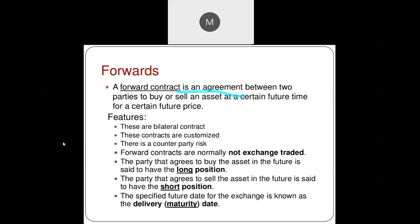Looking at the features of a forward contract: the first feature is that it is a bilateral contract, because it takes place between two parties. Consider two parties X and Y — Mr. X is the buyer and Mr. Y is the seller. The contract takes place between X and Y, and Mr. X decides to buy one product, say gold, from Mr. Y at a predetermined price decided at the time of entering into the contract.